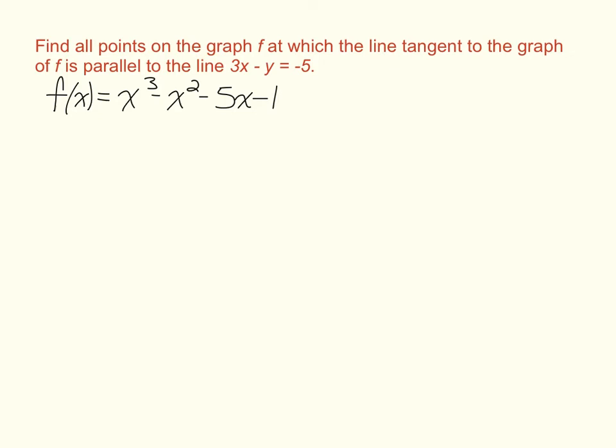Find all points on the graph of f at which the line tangent to the graph of f is parallel to the line 3x minus y equals negative 5. Given this function, f of x equals x cubed minus x squared minus 5x minus 1.